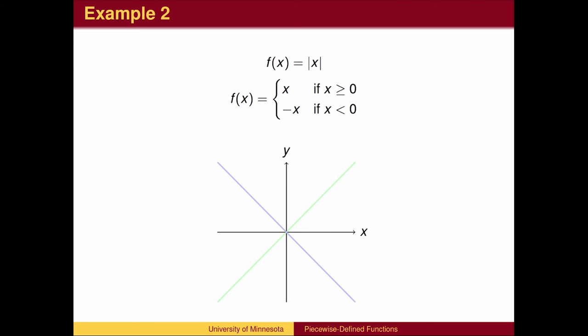Let's look at the graph, piecing together parts of two lines. If x is negative, we graph the line y equals negative x. If x is positive, then we graph the line y equals x. These two pieces form the entire function.